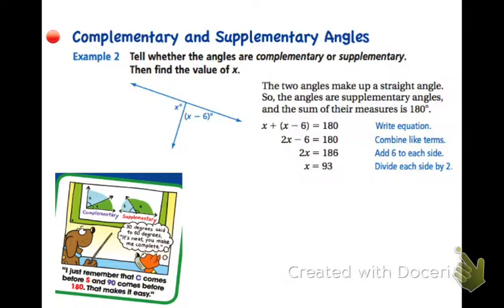The next concept to review is complementary and supplementary. So we're going to tell whether the angles are complementary or supplementary, then find the value of x. Complementary in mathematics means that the sum of the angles measures 90 degrees. Supplementary means that the sum is 180 degrees. Two angles do not have to be adjacent in order to have the relationship complementary or supplementary. So by definition, the two angles total up to 90 for complementary and 180 for supplementary.